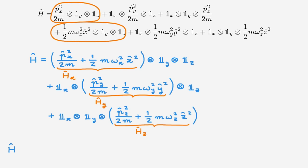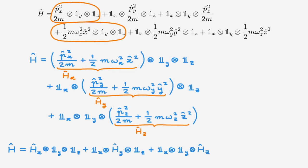With this, we can rewrite the Hamiltonian of a particle moving in a three-dimensional quantum harmonic oscillator as the sum of a term that only involves the Hamiltonian of the particle moving in the x-direction, plus the Hamiltonian along y, plus the Hamiltonian along z. Using the simplified notation, we can rewrite this as Hx plus Hy plus Hz. This shows that the Hamiltonian H of the three-dimensional quantum harmonic oscillator is simply the sum of the Hamiltonians corresponding to the particle moving in each of the three dimensions separately.